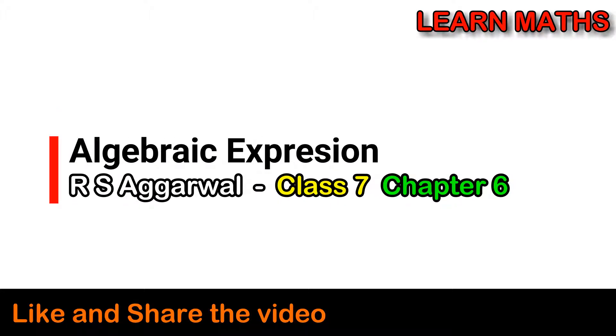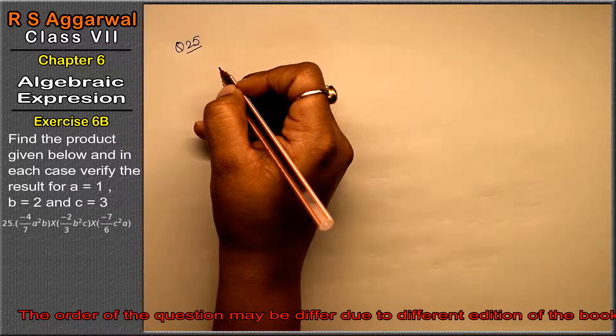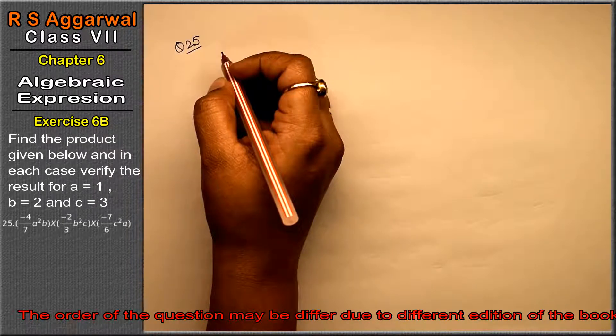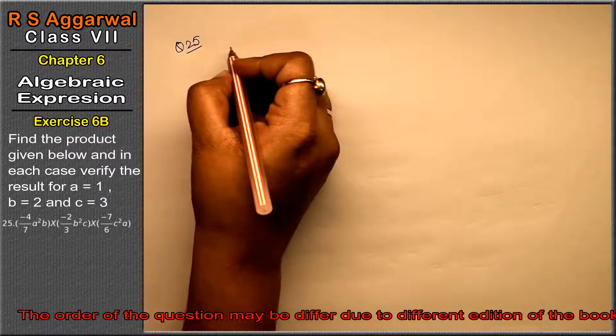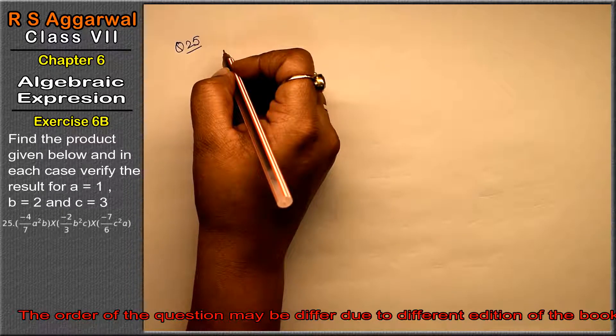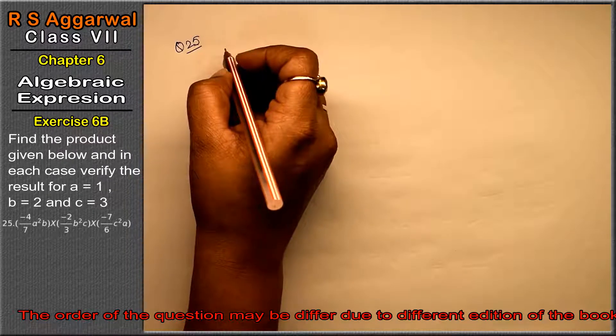Let us do question number 25 of exercise 6B, that is algebraic expression. Question number 25 is: find the product given below and verify it for a equals 1, b equals 2, and c equals 3.